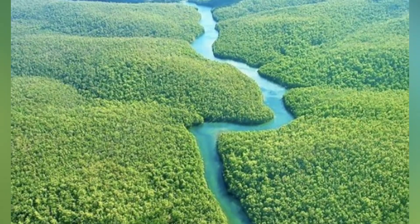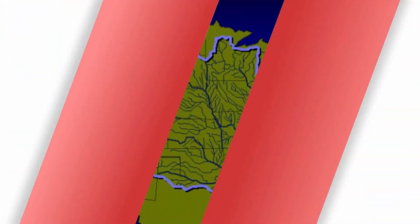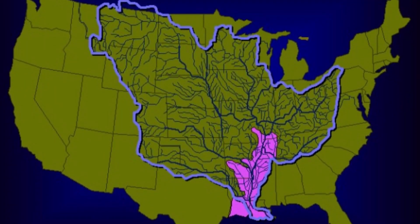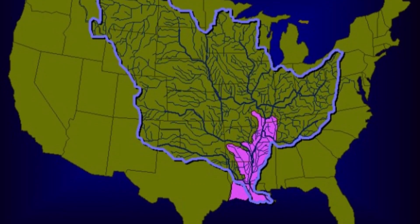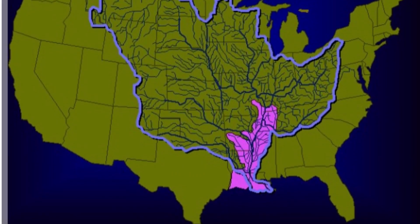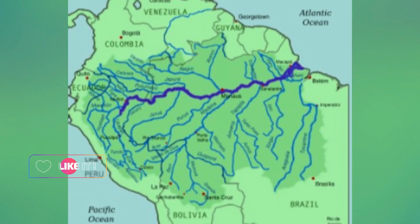The Atlantic Ocean is generally saltier than the Pacific. This is partly because it receives more inflow from rivers, such as the Amazon and the Mississippi, which carry fresh water rich in minerals from their respective continents.